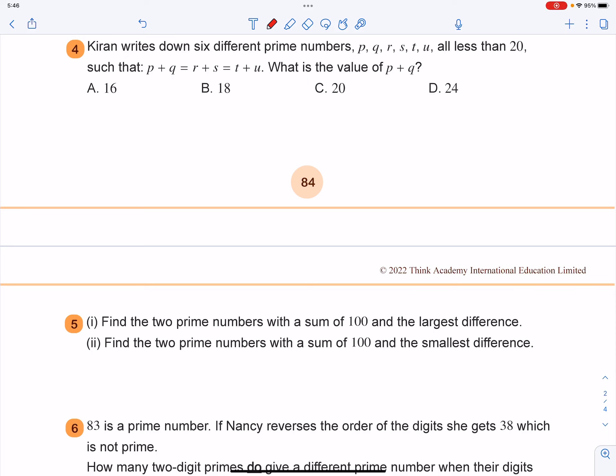Question number 4 of the basic axis is less than 11. Karen writes down 6 different prime numbers P, Q, R, S, T, U, all less than 20, such that P plus Q equals R plus S equals T plus U. What is the value of P plus Q?